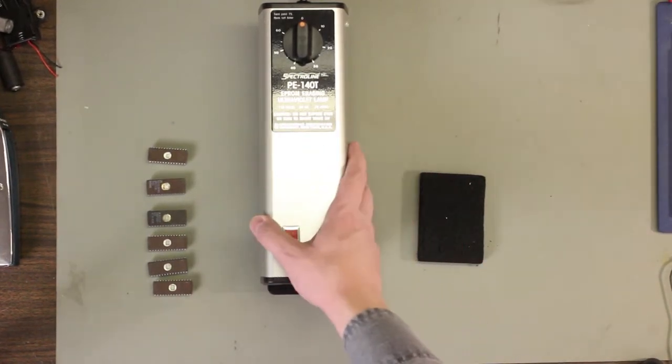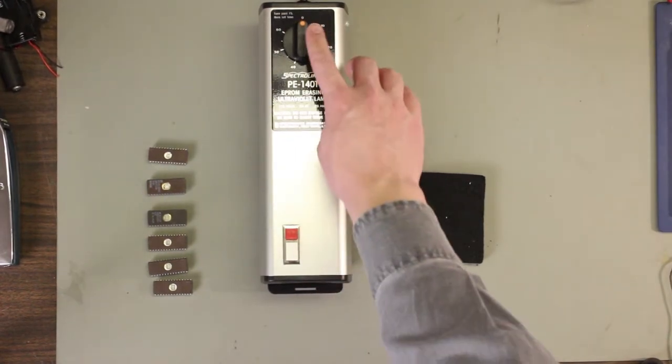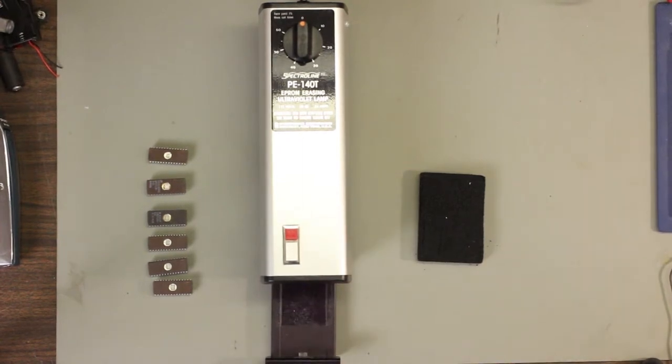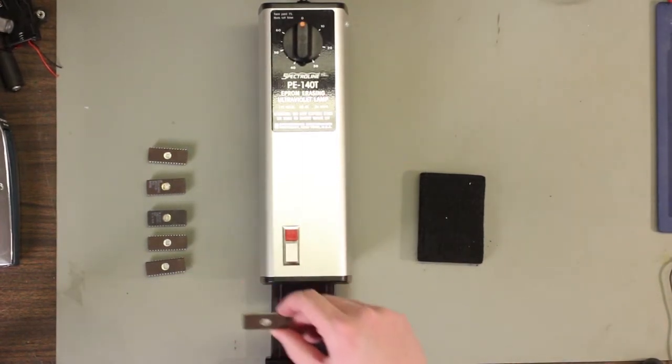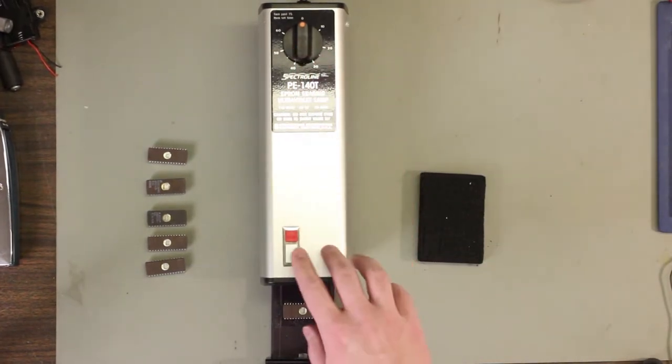So this is an EEPROM eraser. There's many different styles and types on the market. This has a timer built in and a control for the light, and a drawer down here. This is as simple as taking the EEPROMs and placing them in the drawer, setting the appropriate time and turning the lamp on.